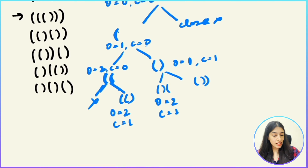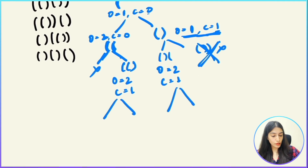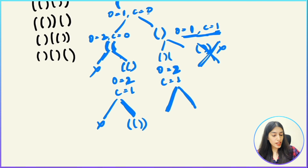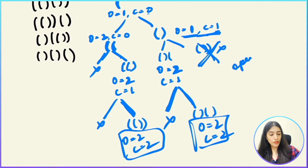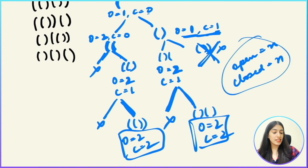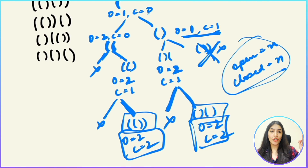Continuing the example: from open=1, close=1, I can't add another close because open is not greater than close. I can add another open since open=1 < n=2, giving open=2, close=1. From open=2, close=1, I can't add open (already at n), so I add close: open=2, close=2. When open equals n and close equals n, that is the base case — we have formed one valid permutation and push it to the result vector.